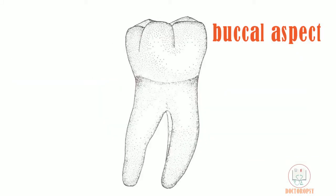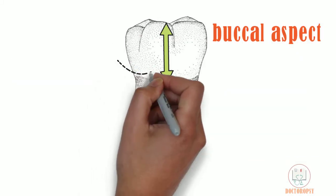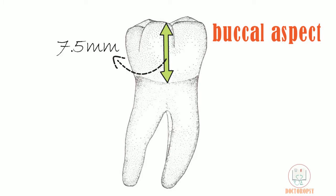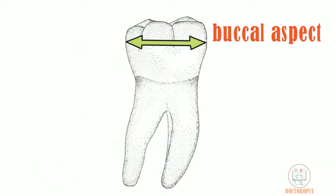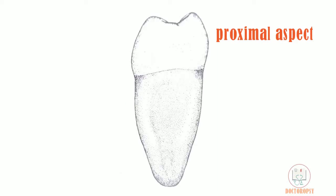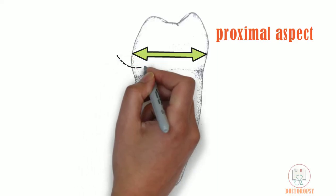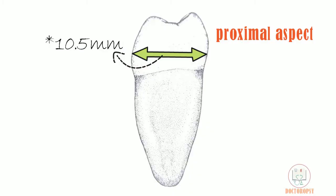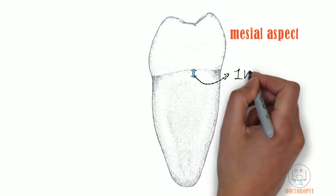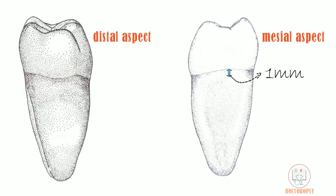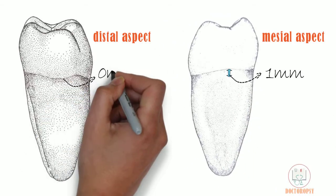Coming to measurements: the cervico-occlusal measurement of the crown is 7.5 mm and the root length is 14 mm. The mesiodistal diameter of the crown is 11 mm and its cervix is 9 mm. The buccolingual diameter of the crown is 11.5 mm and its cervix is 9 mm. The curvature of the cervical line on the mesial side is 1 mm and on the distal side it is flat.